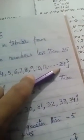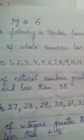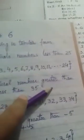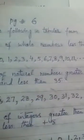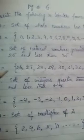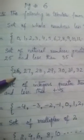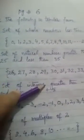B = set of whole numbers greater than 25 and less than 35. Answer: B = {26, 27, 28, 29, 30, 31, 32, 33, 34}.